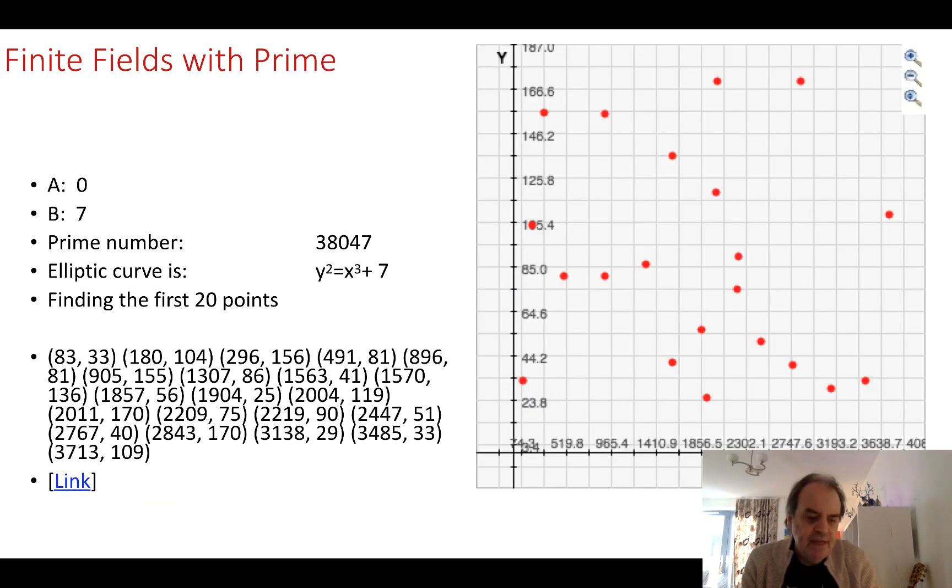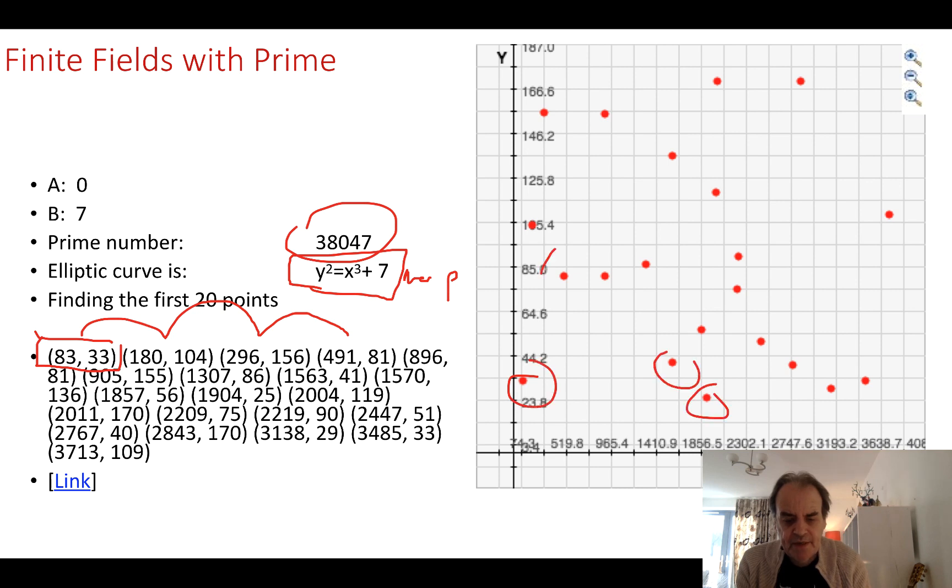What does this look like? Let's take a curve defined by that equation, but we also do a mod p. In this case we'll take a prime number of 338047. When we actually plot that, if we start from one, our first point appears at 83, then 33, then the next one, and we end up with this pattern here. This is what makes our elliptic curve cryptography so secure.